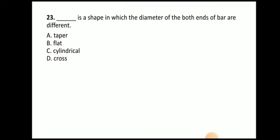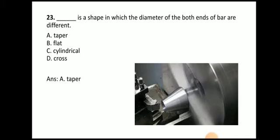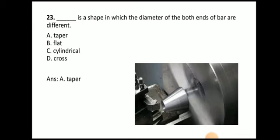Next question: what is the shape in which the diameter of both ends of the bar are different? That is known as taper. Here the diameter is different at each end — this is the larger diameter and this is the smaller diameter. This shape is known as a taper. So taper is a shape in which the diameter of both ends of the bar are different.